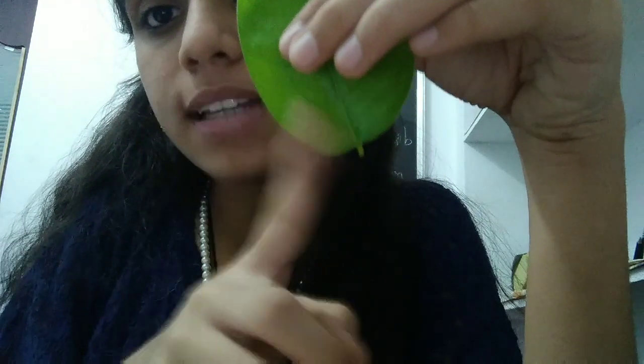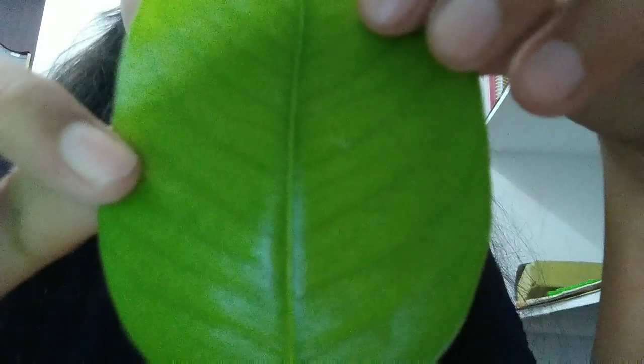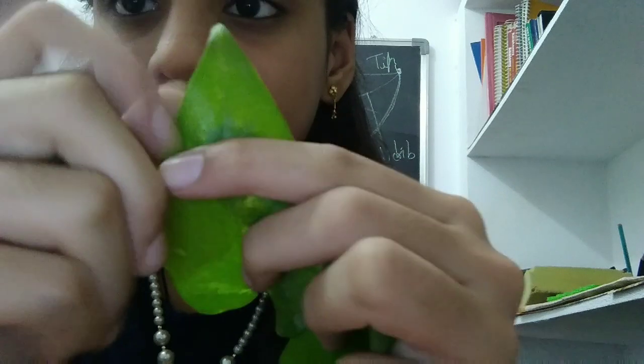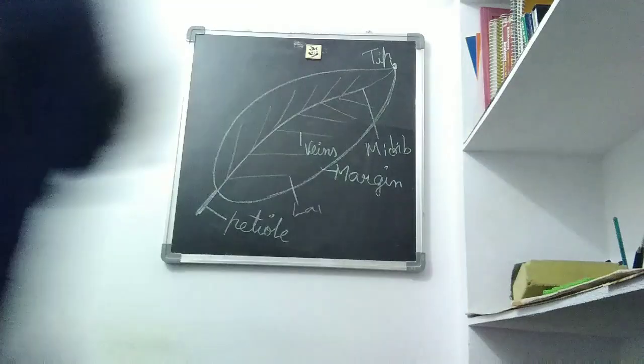This orange leaf is so nice. Let us start from the bottom. This is its petiole. And this middle line which is joined top to bottom is mid-rib. This outline is called margin. And these small lines you are able to see — this is vein. And this full green area is lamina. And this tip — this orange leaf is not having a tip. But see, the money plant's leaf — this is having a tip. That point is called a tip.